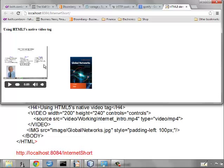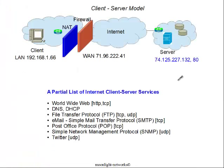This is a partial list of client-server services that run on top of the Internet. The World Wide Web we've discussed extensively. We also talked about two other client-server services: DNS and DHCP. Of course, there's the file transfer protocol. Email uses this model as well — SMTP is the protocol used to deliver messages to an email system, and the post office protocol is used to retrieve them. SNMP is used to manage Internet elements, and then of course there's Twitter.